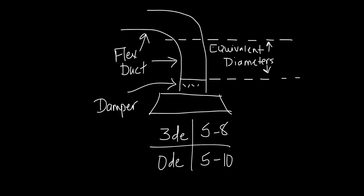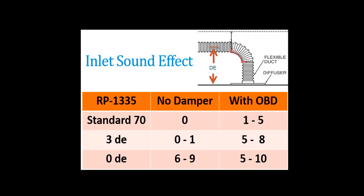Putting the data for the third case and the fourth case side by side points out some interesting trends. Notably, with no damper, there is little difference between the standard 70 installation and the 3 equivalent duct diameter installation, but there is a jump when you go to the 0 equivalent duct diameter installation.